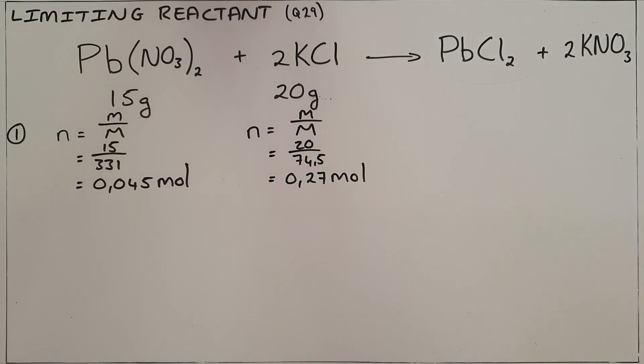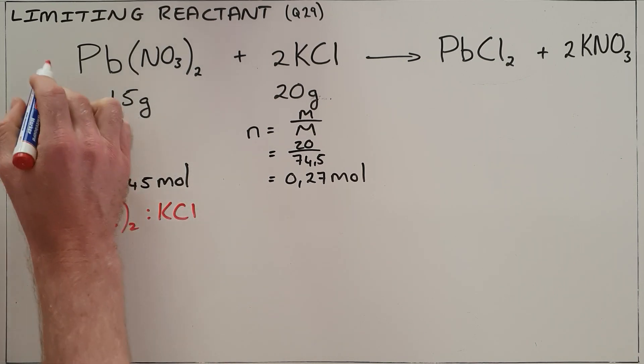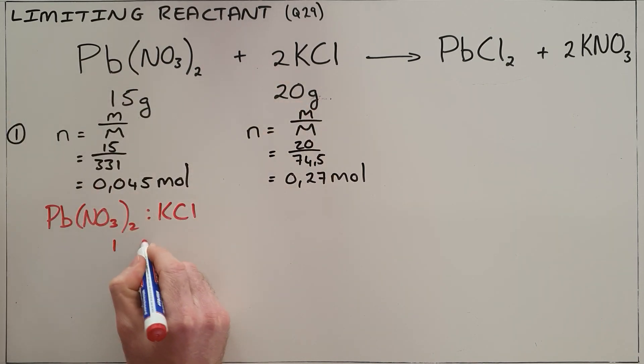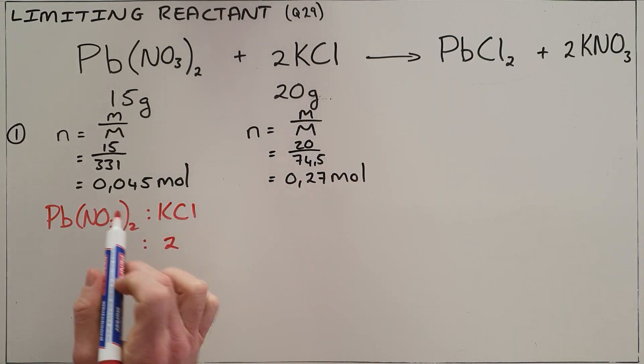Then we can use the ratio in which these two substances react to determine which is the limiting reactant. We can do that by saying the ratio in which lead nitrate reacts to potassium chloride, as taken from the balanced equation, is one to two.